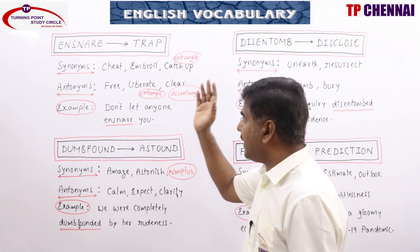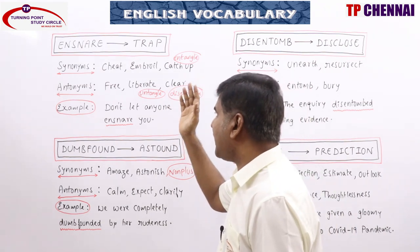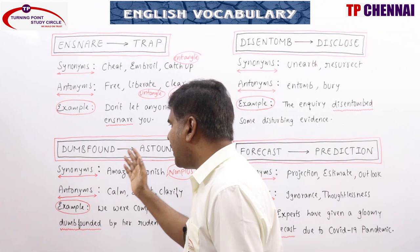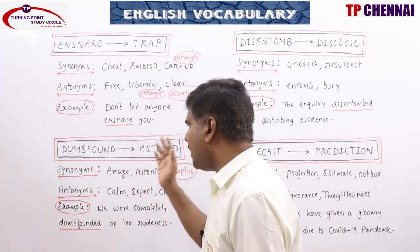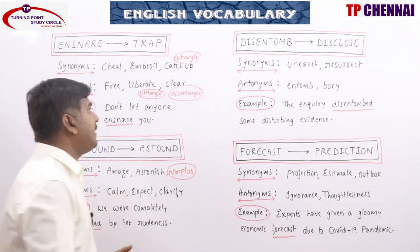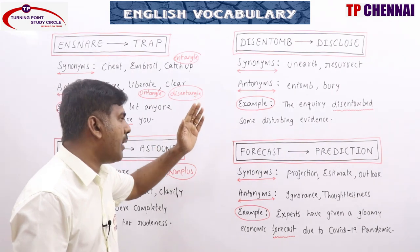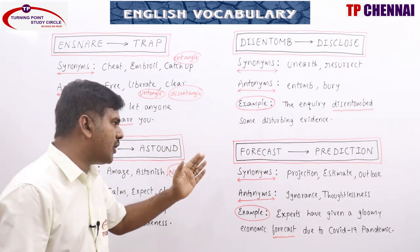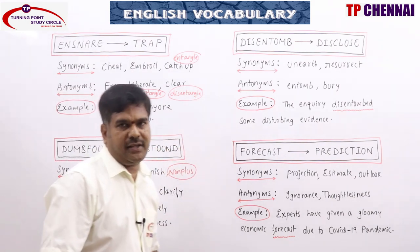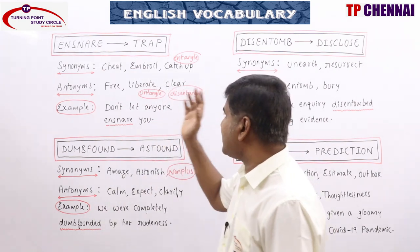Today's vocabulary words are: ensnare, dumbfound (d-u-m-b-f-o-u-n-d), disentomb (d-i-s-e-n-t-o-m-b), and forecast (f-o-r-e-c-a-s-t).